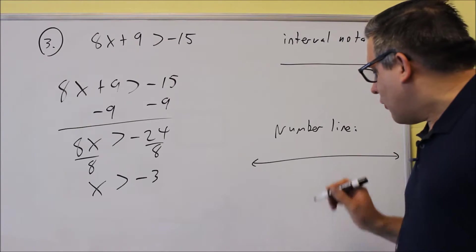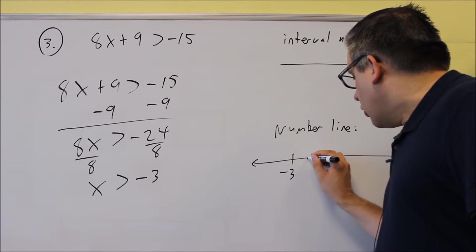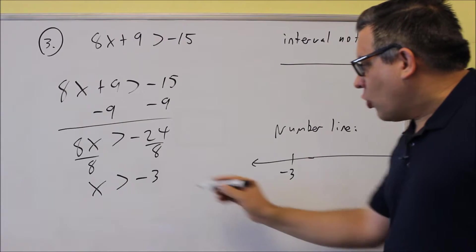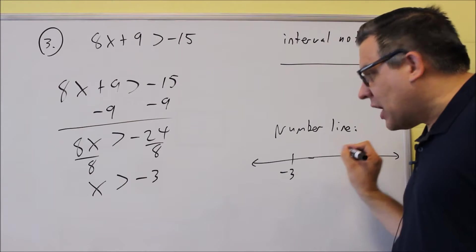This says x is greater than negative 3. Okay, so I'll just label this, or I'll just look at my number line where negative 3 is on there. And then greater than means it's going to be going to the right towards positive numbers.